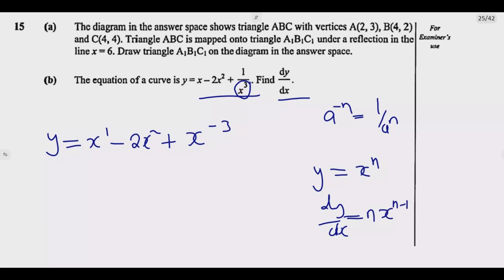So dy/dx equals 1 times X to the power 1 minus 1, then minus, we have 2, then the power 2, then X to the power 2 minus 1,